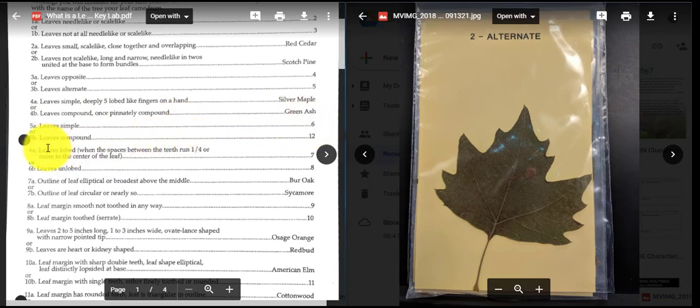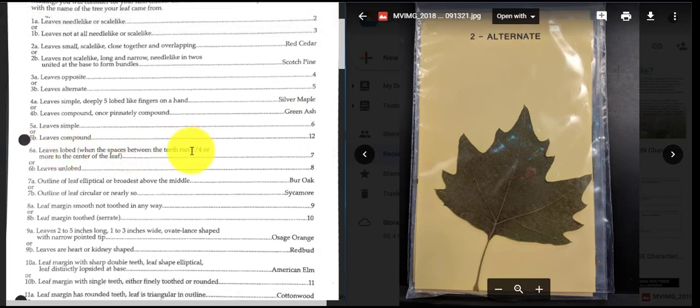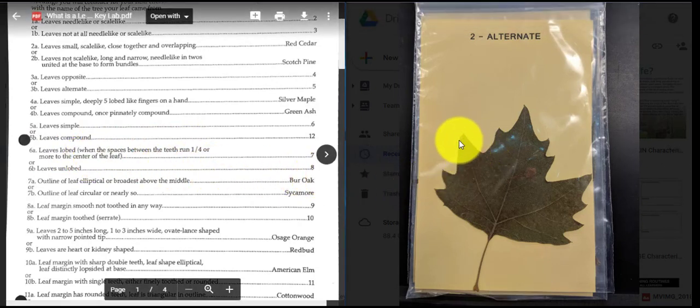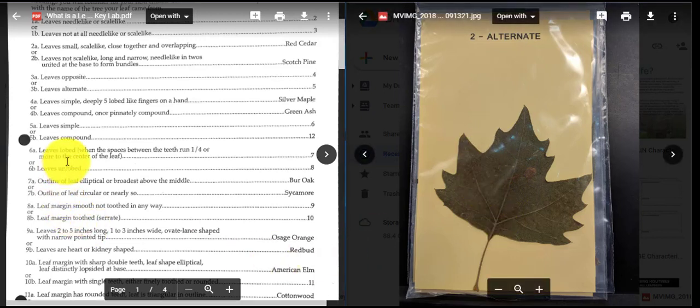So now I'm going to take a look at couplet number six. Leaves are lobed, which means the spaces between the teeth run a quarter or more to the center of the leaf. So if I take a look at the spaces between the teeth, so here's one tooth, and here's another tooth, so each pointy edge or pointy peak is a tooth. Some of these cuts are pretty deep, and they run pretty deep towards the midrib, which is the center of the leaf here. So that's going to make this lobed. So because this leaf is lobed, I'm going to move on over again, and it tells me to go to couplet number seven.